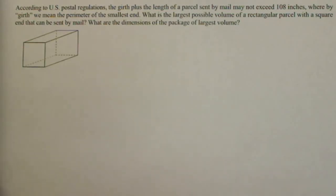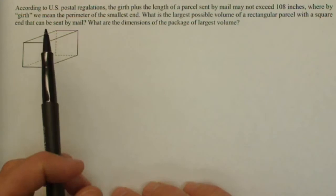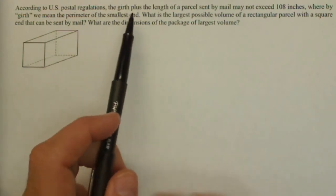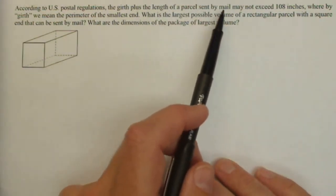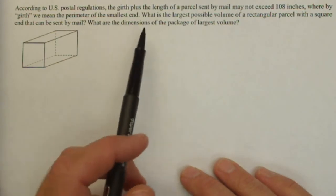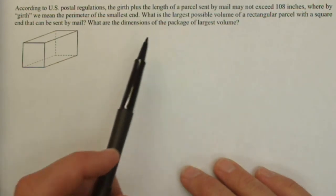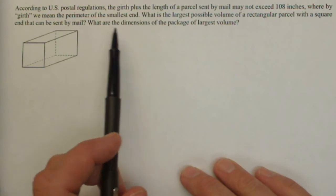In this video we're going to solve a very common calculus problem. According to U.S. postal regulations, the girth plus the length of a parcel sent may not exceed 108 inches. What is the largest possible volume of a rectangular parcel with a square end that may be sent by mail?